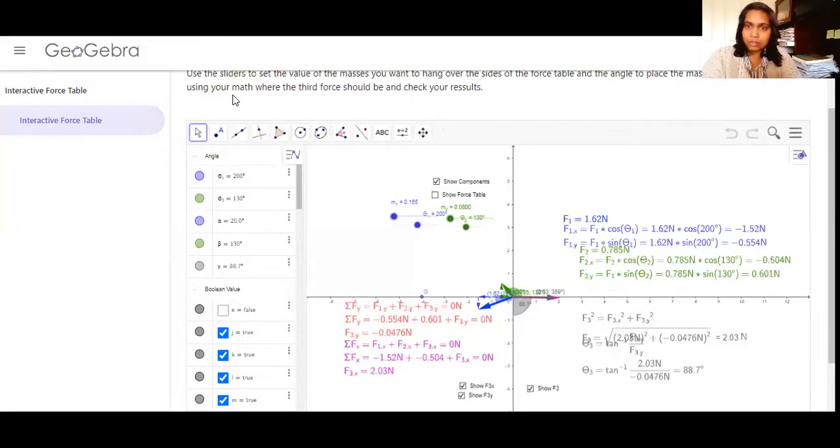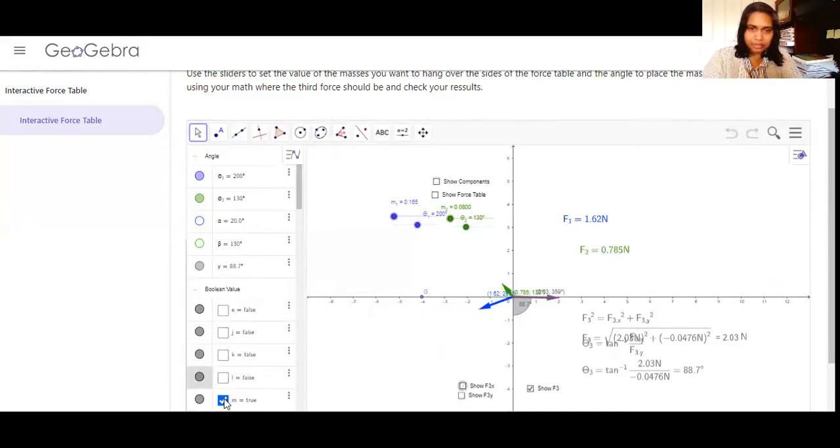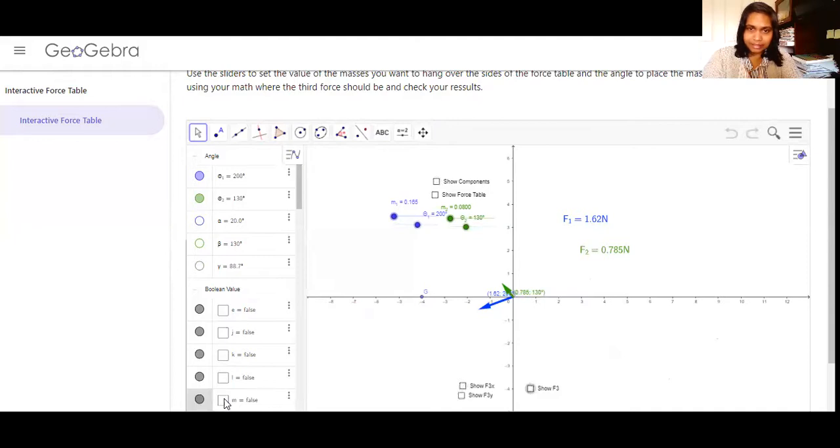The simulator screen looks like this. Once you initially open it, it looks really chaotic and it's hard to follow. So the first thing you should do is unclick on the values under the Boolean's value. Uncheck all of this. It will clear up the screen here.